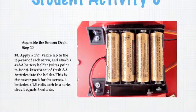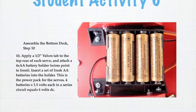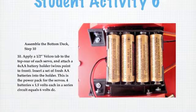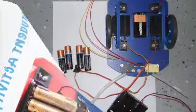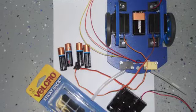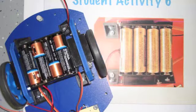In student activity six, they'll get to mount the batteries in series into the holder, and then using one-inch pieces of Velcro, they'll be able to mount that on top of the servos between the wheels over the nine-volt.